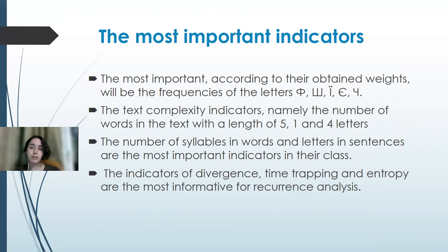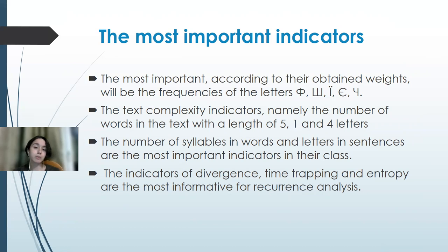Regarding the most important indicators according to the obtained weights: the most informative letter frequencies are F, SH, Y, E, and CHO. For text complexity indicators, the numbers of words with 5, 1, and 4 letters have the biggest weights. Numbers of syllables in words and letters in sentences are also among the most important complexity indicators. For recurrence analysis indicators, divergence, time-trapping, and entropy are the most informative according to our results.